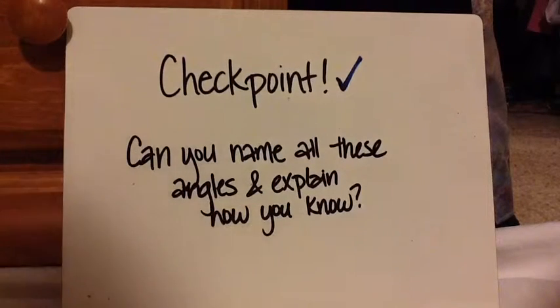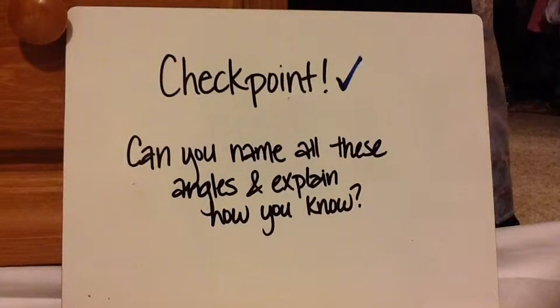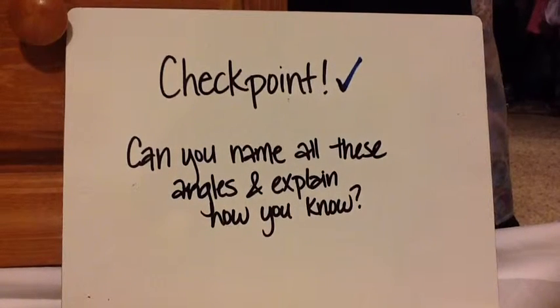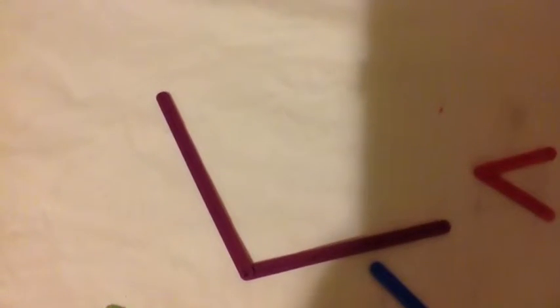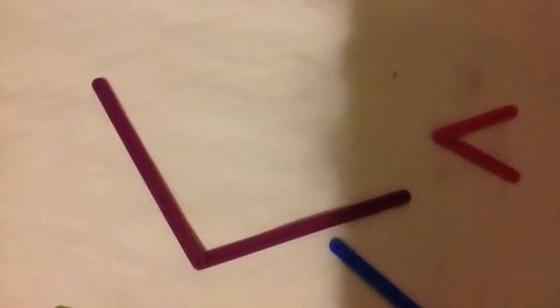Checkpoint time! I'm going to show you a bunch of different angles. Press pause, tell me which ones they are, and explain how you know. Okay, let's start with this one — this one is obtuse. I'm going to turn it so you can see it is clearly wider than a 90-degree angle. You can even use the corner of this paper, which is a 90-degree angle, to check and see how the angle is sticking out beyond it. That makes it obtuse.